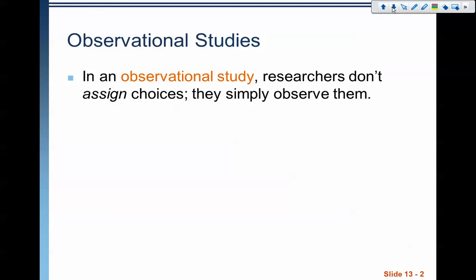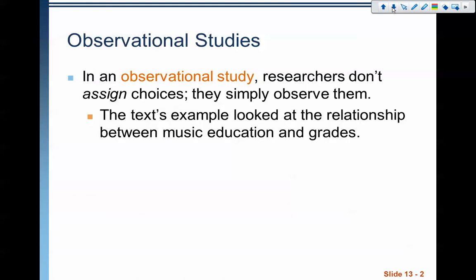What we're talking about here is a situation where we want to gather some data. The text example is looking at the relationship between music education and grades — basically saying that those kids who are deeply ingrained in music education tend to have higher grades. So we're going to take some kids at a young age, go to a music education program, follow those kids over time, and see how their grades compare to a group of students who are not in it.